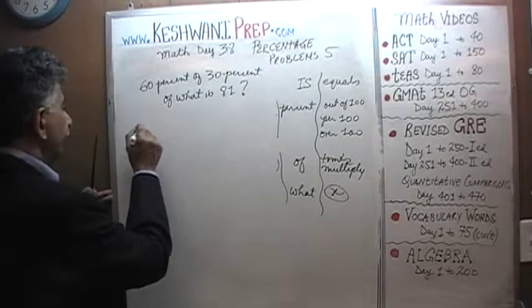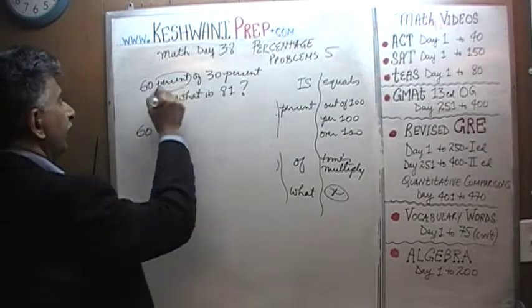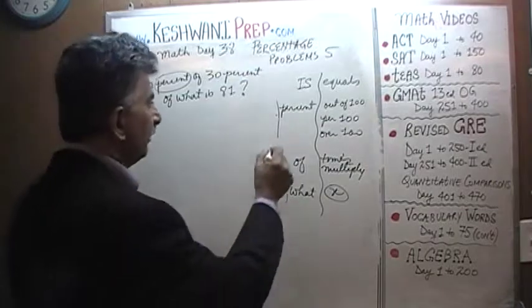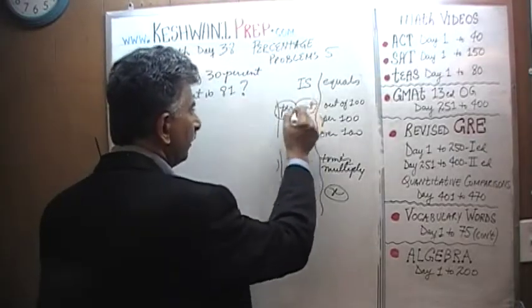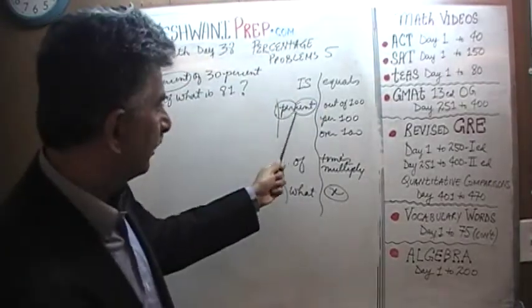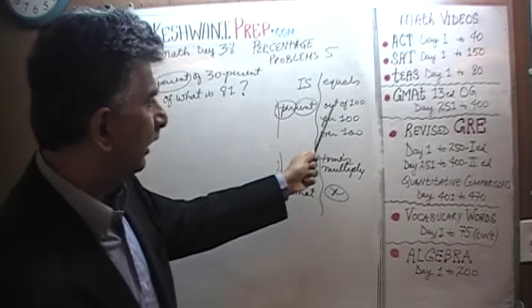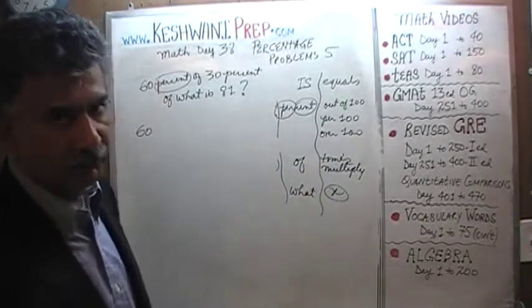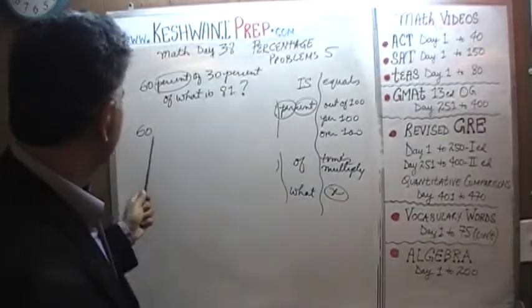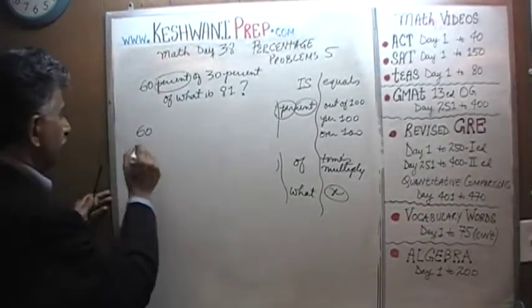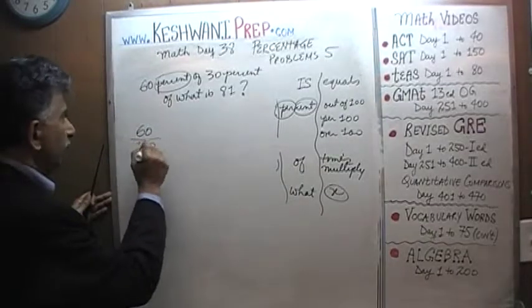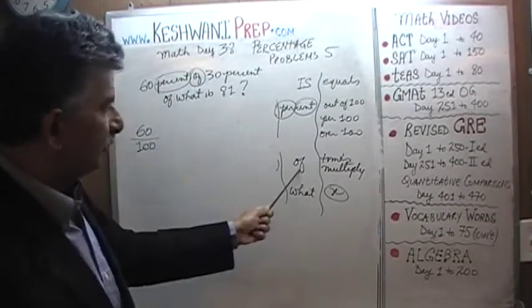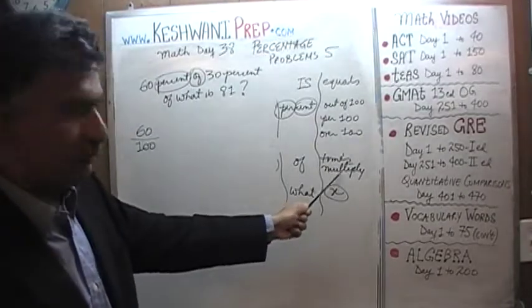60% means percent, which means per 100, or over 100. So 60% becomes 60 over 100. The word 'of' simply means times — multiply. So 60% of 30% becomes 60 over 100 times 30 over 100.